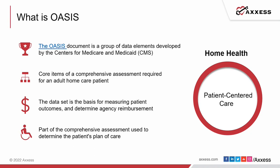The integration of that comprehensive assessment into the OASIS data set is the basis for measuring patient outcomes and determining agency reimbursement. Much of what we do in data collection is actually determining how much the agency will be paid and how much care the patient can actually get. So it's important that we study these guidelines carefully and assure that patients are getting everything they need. Part of the comprehensive assessment is also used to determine the patient's plan of care.